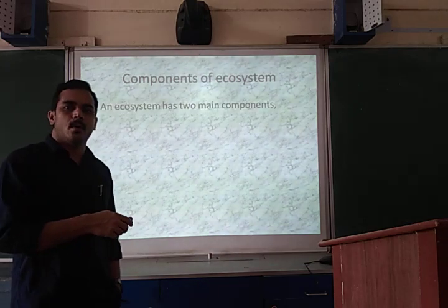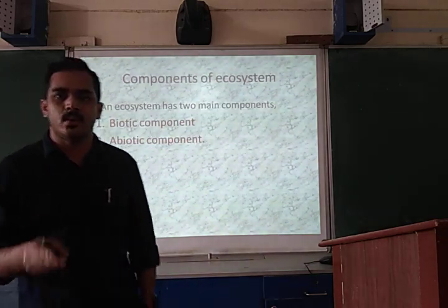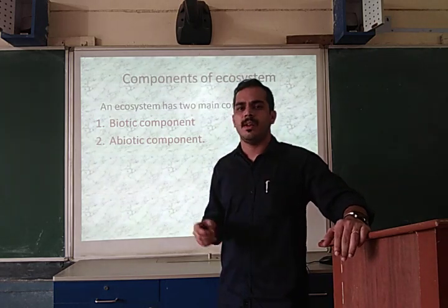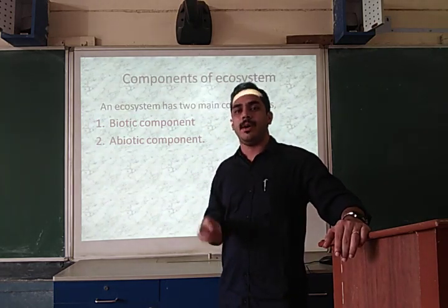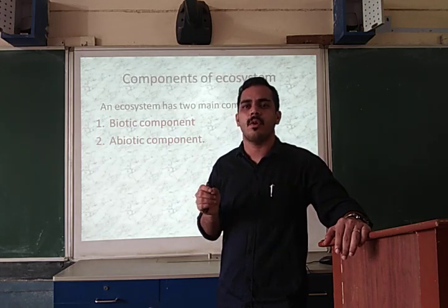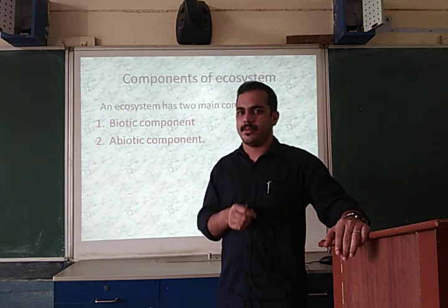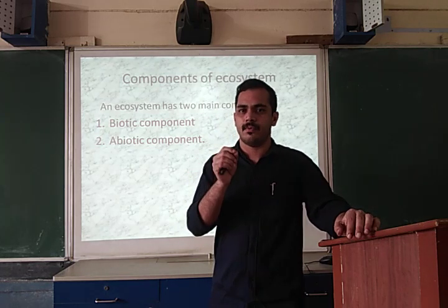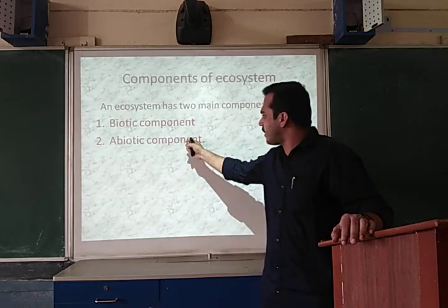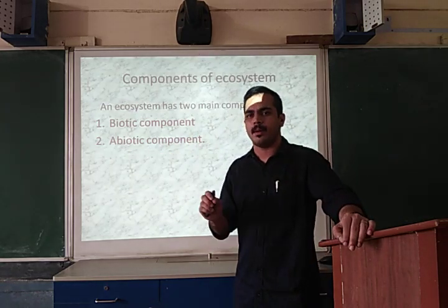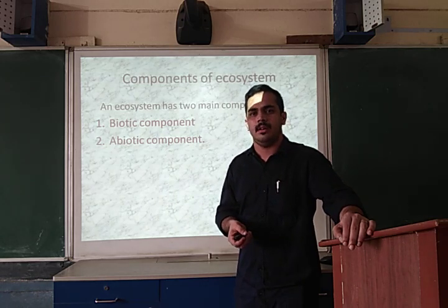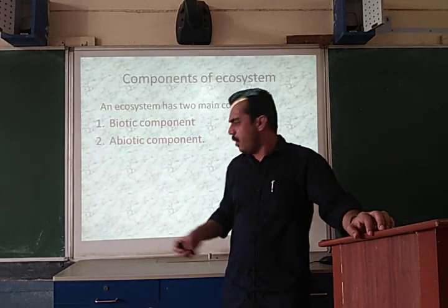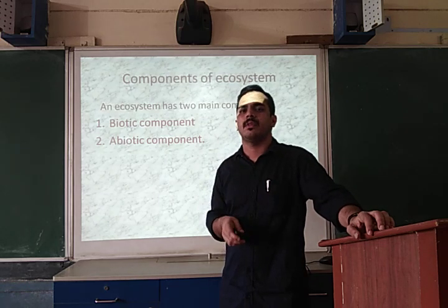Next, I am going to explain the components of ecosystem. There are two types of components of ecosystem. The first one is the biotic component and the second one is the abiotic component. The biotic component means all the living constituents in the environment — for example, all plants, animals, and microorganisms are examples of biotic components. The abiotic component means all the non-living factors — for example, temperature, soil, and water are examples of abiotic components.